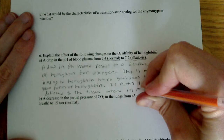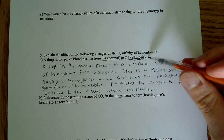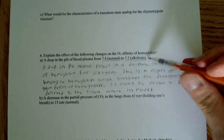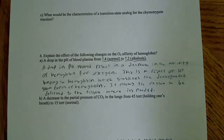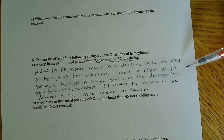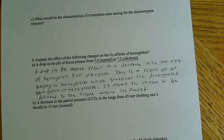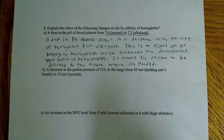By stabilizing the deoxygenated form of hemoglobin, it allows the oxygen to be delivered to the tissue where it's needed. It's harder for oxygen to bind under these conditions, but much easier for it to be delivered to the tissue. A complete answer: a drop in pH would result in a decrease in the affinity of hemoglobin for oxygen; this is a result of H+ binding to hemoglobin which stabilizes the deoxygenated form, allowing oxygen to be delivered to the tissue where it is needed.